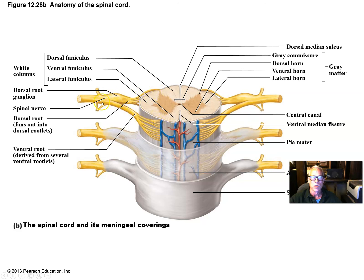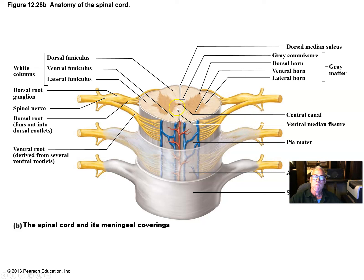As soon as the spinal nerve emerges from the intervertebral foramen, it branches into the dorsal ramus and the ventral ramus. There are also additional branches that are part of the autonomic nervous system. In the dorsal root are the terminals of unipolar sensory neurons, whose cell bodies carry impulses up to the thalamus, and then a third neuron carries signals from the thalamus to the cortex.